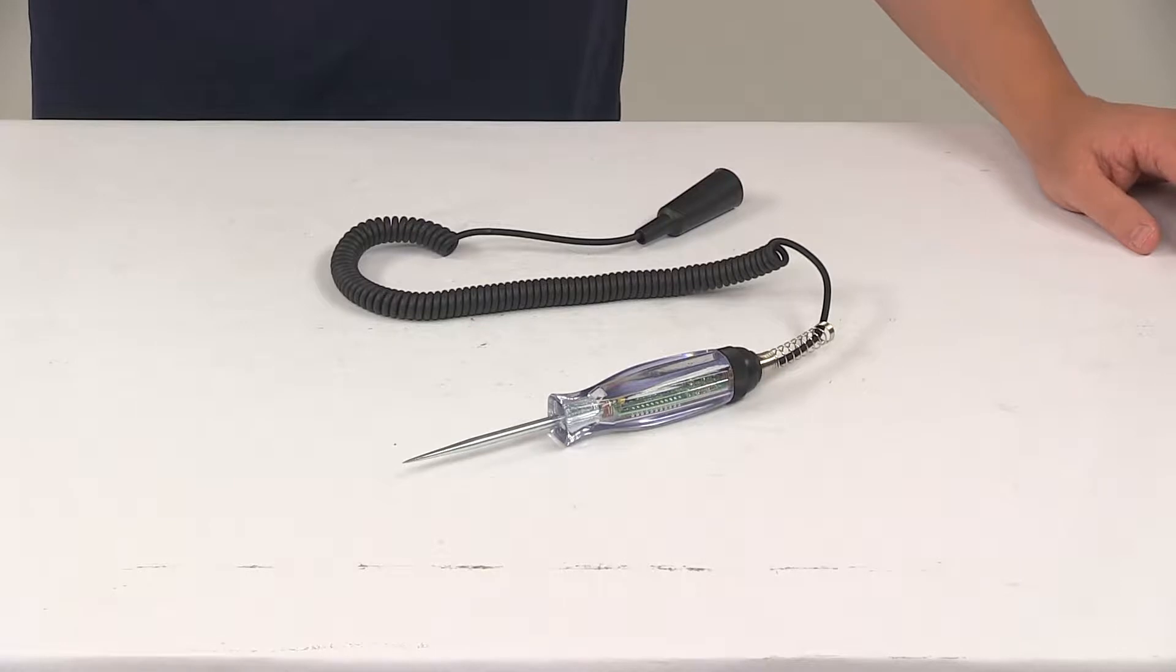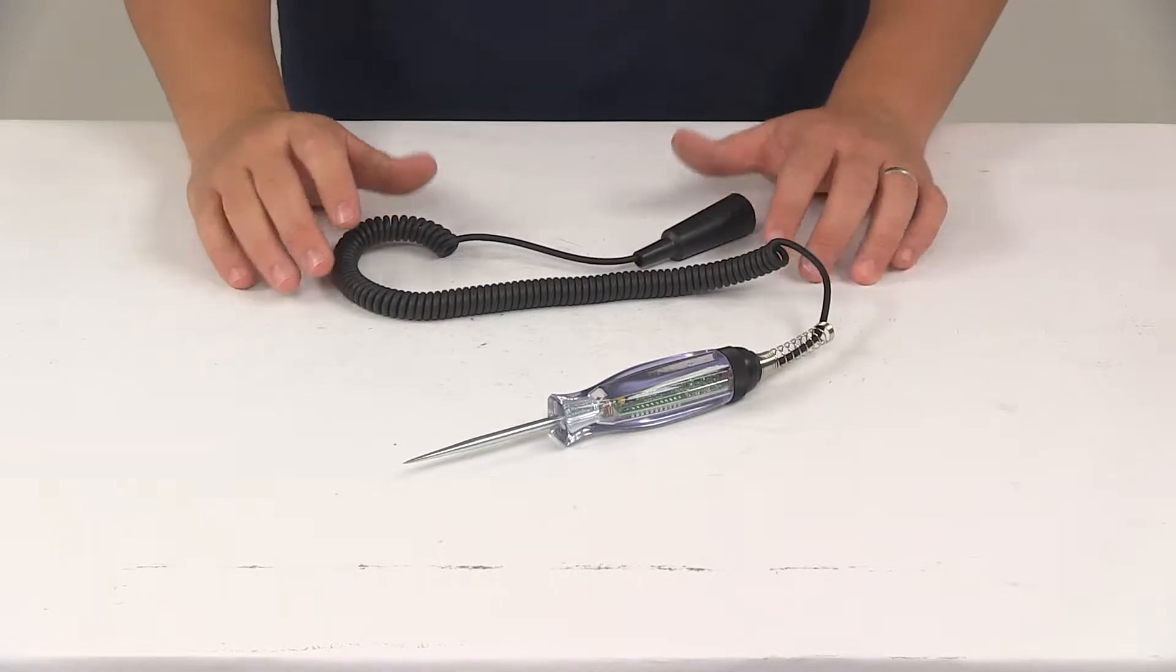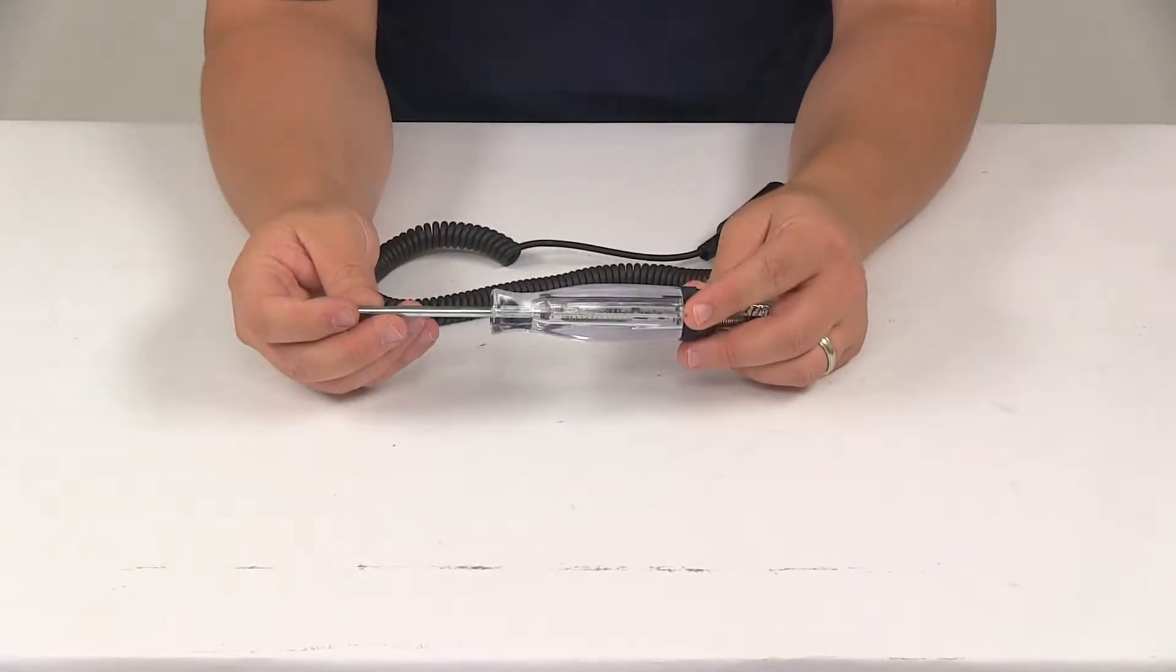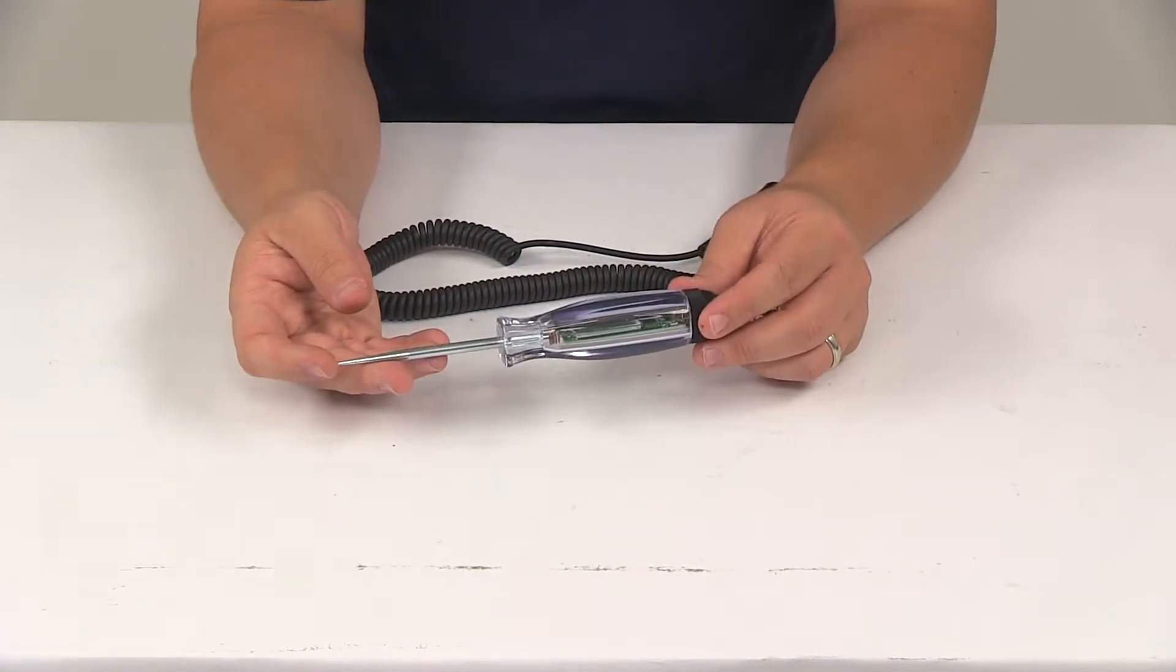It's going to be ideally used to detect power, voltage, ground and circuit integrity. Surge protected circuitry is going to display DC voltage from 3 volts to 48 volts with a plus or minus 0.3 volt accuracy.